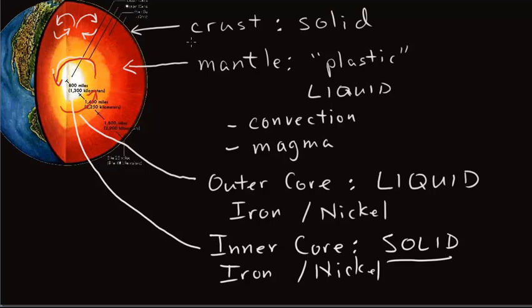So we have our four main parts: we have our crust, we have our mantle, we have our outer core, and we have our inner core.